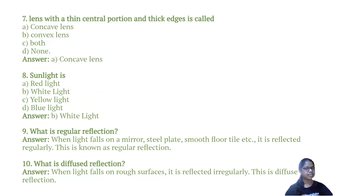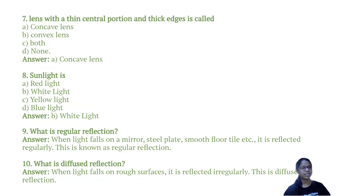Sunlight is white light. What is regular reflection? When light falls on a mirror, steel plates, smooth floor tiles, etc., it is reflected regularly. This is known as regular reflection.